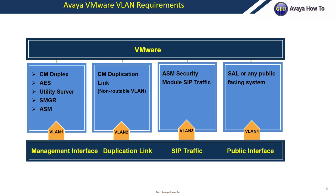Avaya VMware VLAN requirements. When you virtualize your environment, Avaya requires a minimum of four VLANs. VLAN 1, a management interface VLAN — this is where you will put your CMIP, your AES, your utility server, your system manager, and your session manager management IP address.